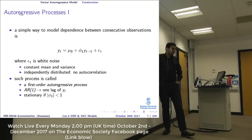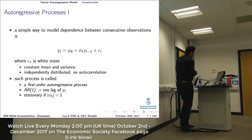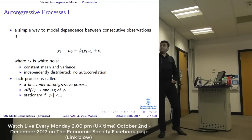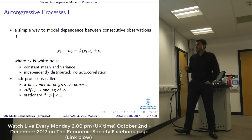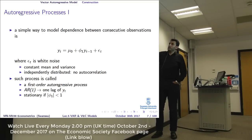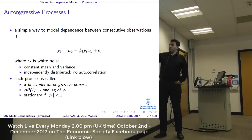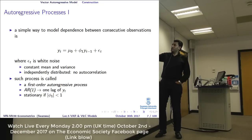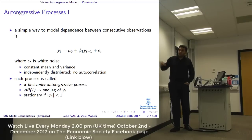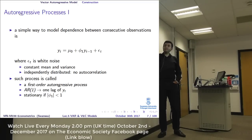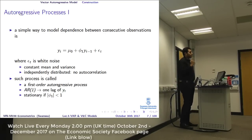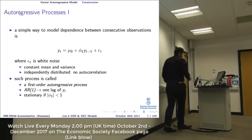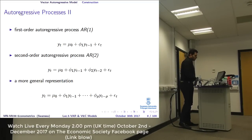The first part we will look at is the autoregressive process. A simple way to model time series data is to regress yt on its value at time t minus 1. So yt depends on a constant plus φ₁·yt₋₁ plus an error term. This is the first-order autoregressive process, AR(1), and this process is stationary if the absolute value of φ₁ is less than 1.